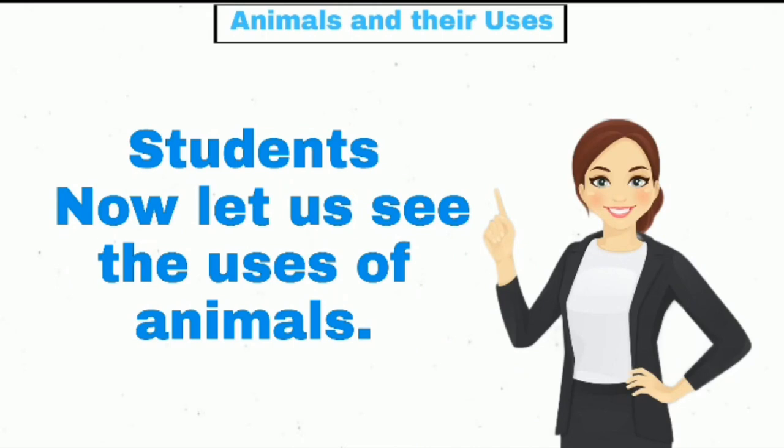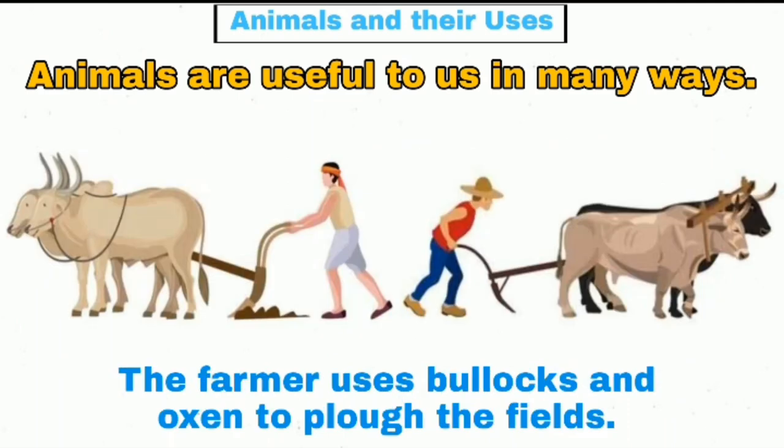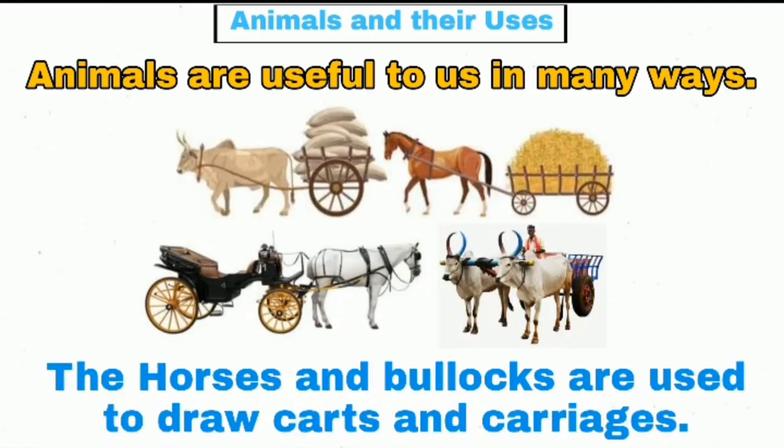Students, now let us see the uses of animals. Animals are useful to us in many ways. The cow, buffalo, and goat give us milk. The farmer uses bullocks and oxen to plow the fields.